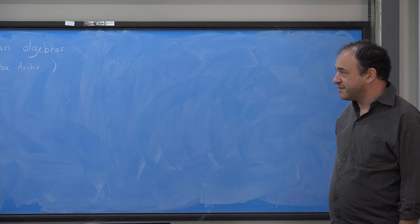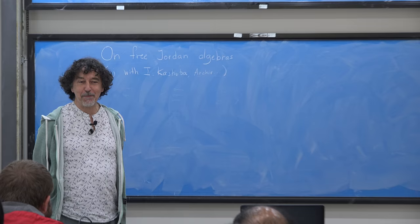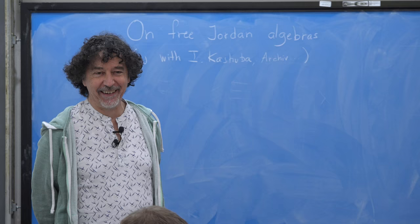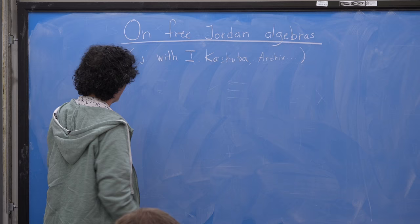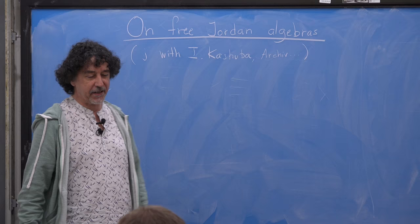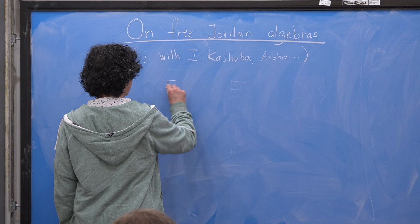It's a big honor to be here, maybe a little bit too big and that's why your virus came. Let's start with the problem. I'm working over a field of characteristic zero, so the theory is in characteristic zero, and I'm looking at free Jordan algebras.